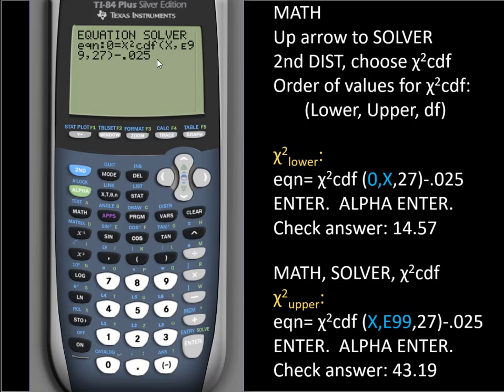It's now going to solve for the chi-square critical that has two and a half percent of area between the chi-square value and infinity on the right. Enter. And again, I need to press alpha and enter to tell the calculator to solve. And it might take a couple of seconds. And you'll eventually get the correct answer of 43.19.